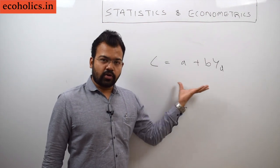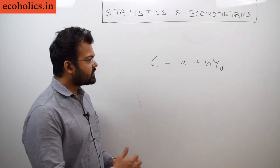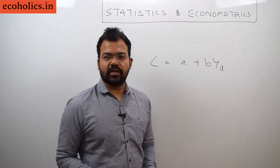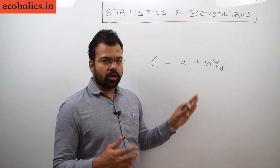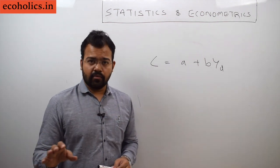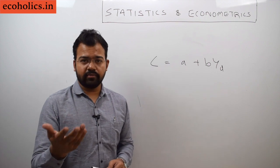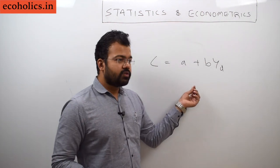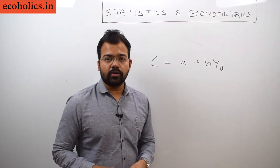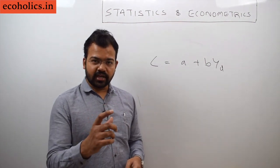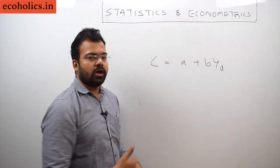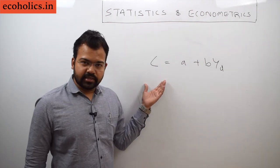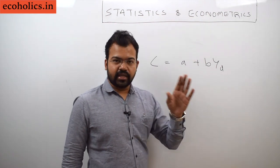As your income goes up your consumption will also go up, and we need to understand how much consumption will increase with an increase in income. So by knowing the increase in income we can calculate how much the consumer will increase their consumption. Here A is the autonomous consumption — what an individual consumes even with no income, by borrowing etc. — and B is the marginal propensity to consume, meaning the degree to which an increase in income leads to an increase in consumption.